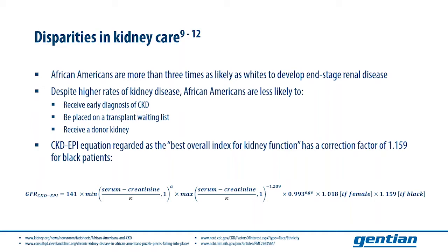accounts for the higher eGFR observed in African American patients across 10 studies with a 15.9% increase in eGFR over that of individuals belonging to other races. For a patient with below average muscle mass, such an increase could delay diagnosis of CKD and interventions against progression into end-stage renal disease.